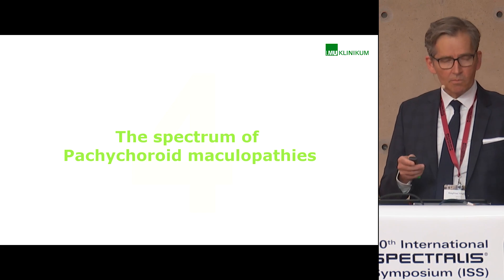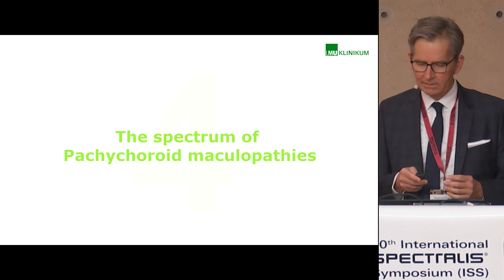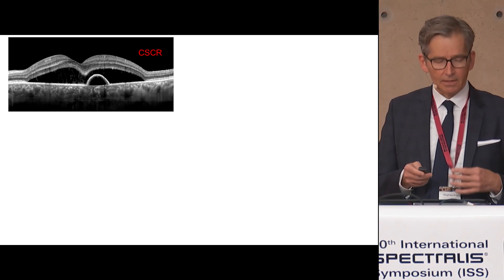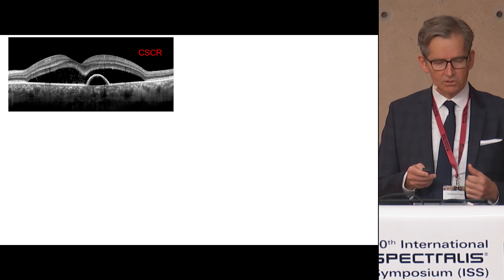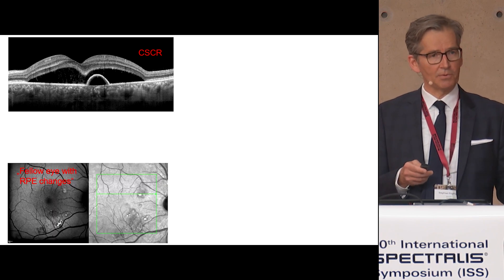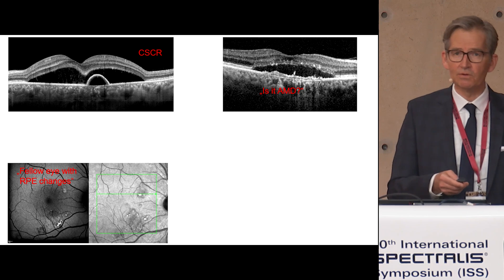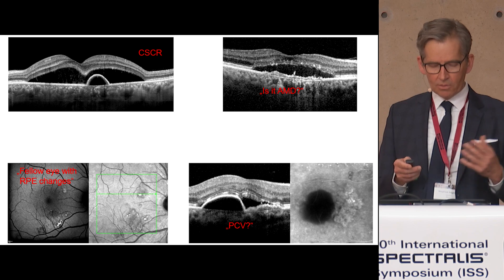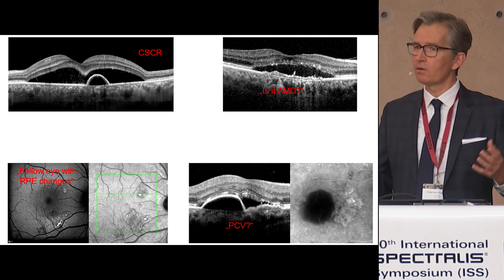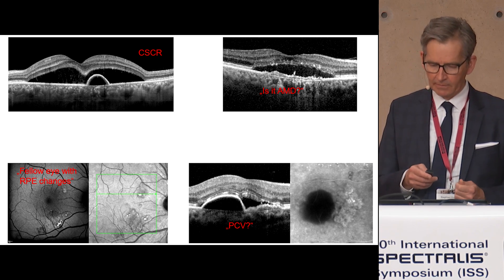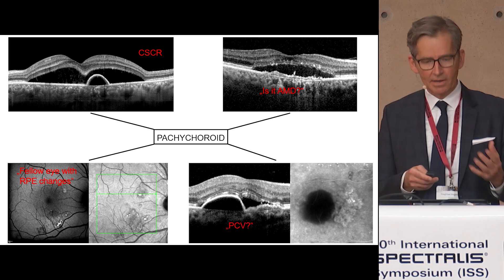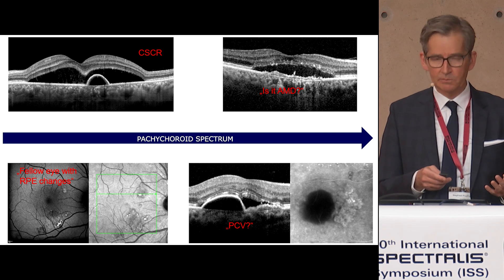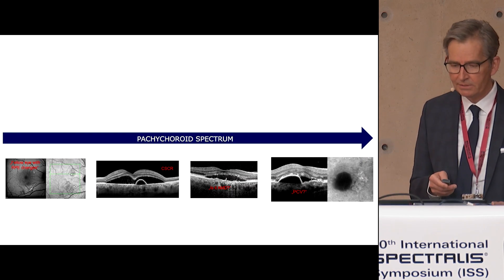The spectrum of Pachychoroid maculopathies covers four diseases: central serous choroidopathy, where typically the fellow eye also has RPE changes; MNV, typically in younger patients; and PCV with a thick choroid. All these diseases are linked to the Pachychoroid phenotype. However, probably there are not four diseases by themselves, but four stages of one disease.